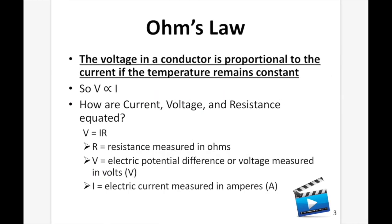Ohm's Law. The voltage in a conductor is proportional to the current if the temperature remains constant: V is proportional to I. V = I × R, where R is the resistance measured in ohms, V is the electric potential difference or voltage measured in volts, and I is the electric current measured in amps.